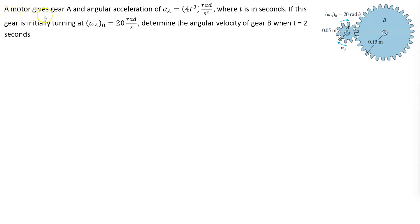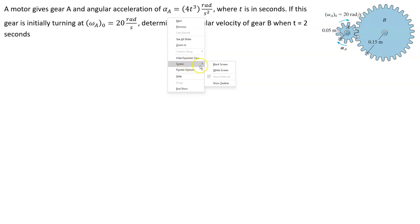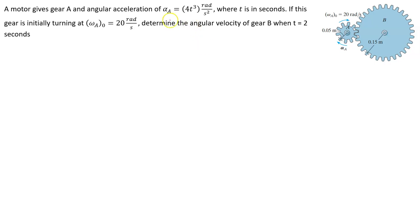We have a motor that gives gear A an angular acceleration of alpha sub A equal to 4T cubed radians per second squared, where T is in seconds. The motor is tied to this gear here, rotating clockwise, and its acceleration is given to us as a function: 4T cubed radians per second squared. That is the acceleration — it's accelerating at that function with respect to time.